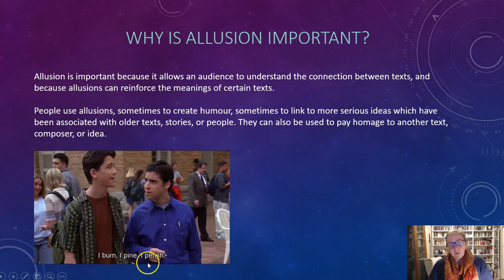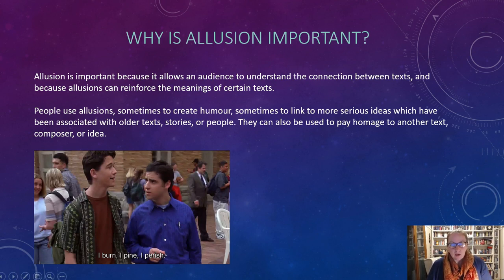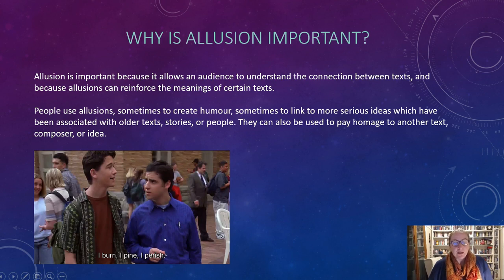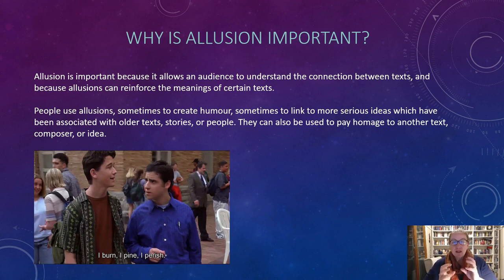People use allusions sometimes to create humor — like Cameron saying 'I burn, I pine, I perish,' which we saw Lucentio say in The Taming of the Shrew. It's hyperbolic, over-the-top romantic, and supposed to be comedic. Sometimes they link to more serious ideas associated with older texts or people. Allusions can also be used to pay homage to another text, composer, or idea. Allusions are important basically because they reinforce ideas, and because they're really fun to try and find. Good luck with your sheet!